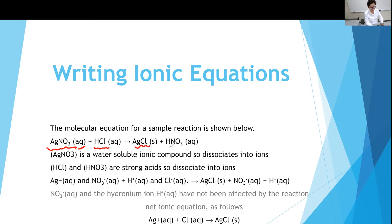And HNO3, which is also Aq. Using a solubility table, you can determine which compound is Aq and which is not. When writing the ionic equation, you can only break the compounds that are soluble in water, designated as Aq, into their ions, because they dissociate in water and generate ions. So going from a molecular equation to a complete ionic equation, we break only the compounds designated Aq. So silver nitrate would change to silver ion and nitrate ion.